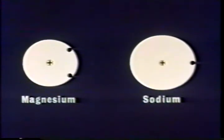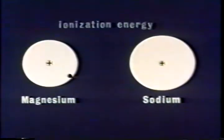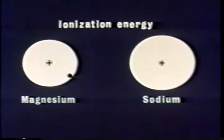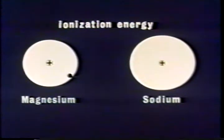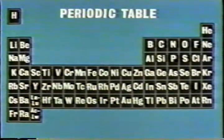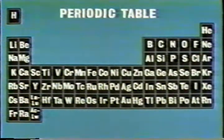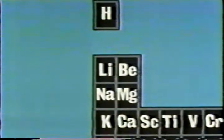La fuerza que sujeta los electrones exteriores del magnesio es mayor que la del sodio. Pensamos en esta fuerza como la energía que se requiere para sacar un solo electrón del átomo; esta energía se llama energía de ionización o potencial. La energía de ionización determina la tendencia de un átomo a perder sus electrones. En la tabla periódica, los elementos aparecen de acuerdo con el número de electrones exteriores de sus átomos. Cada columna vertical se llama grupo y cada línea horizontal, periodo. Al ir hacia la derecha en los períodos de la tabla, la energía de ionización tiende a aumentar.